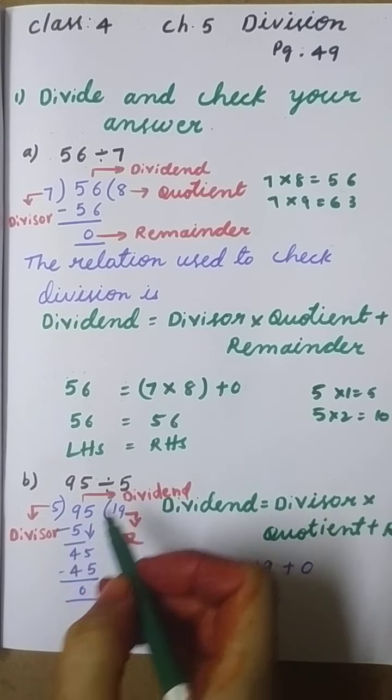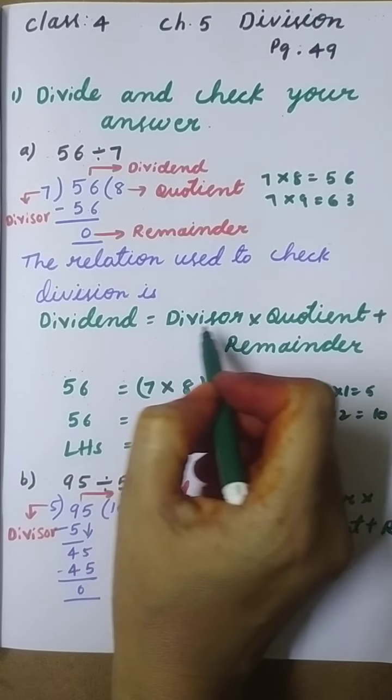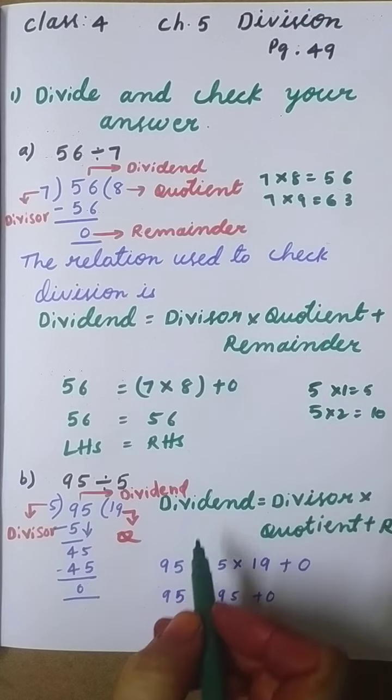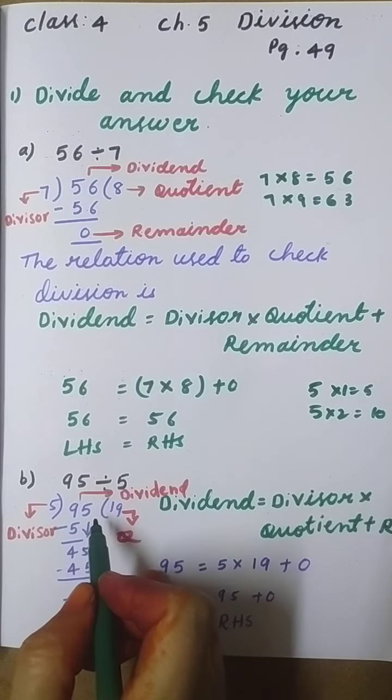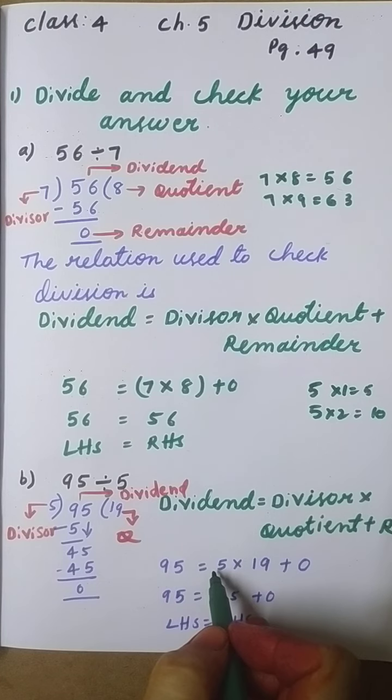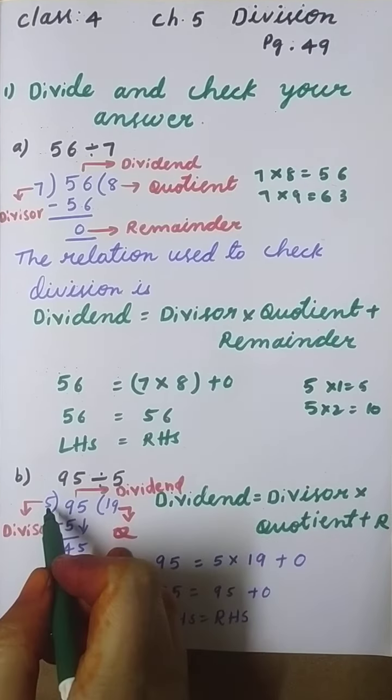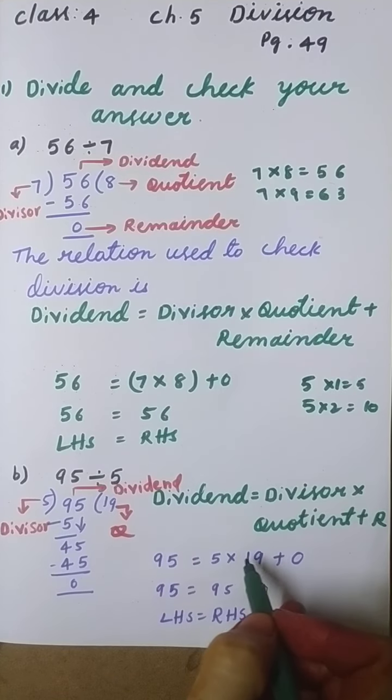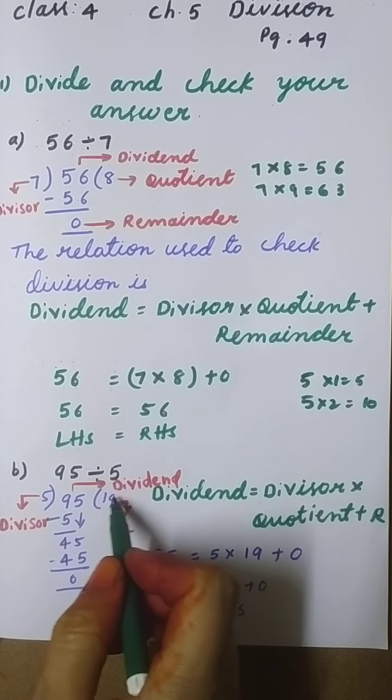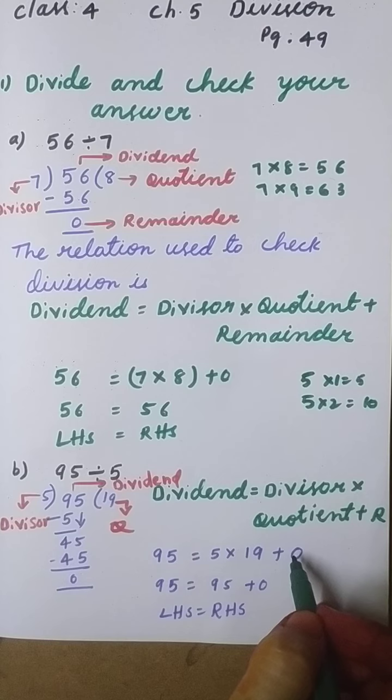Now we have to check. The relation used to check division is: Dividend equals Divisor times Quotient plus Remainder. What is the dividend here? 95. What is the divisor? 5. So 5 times the quotient, which is 19, plus the remainder, which is 0.